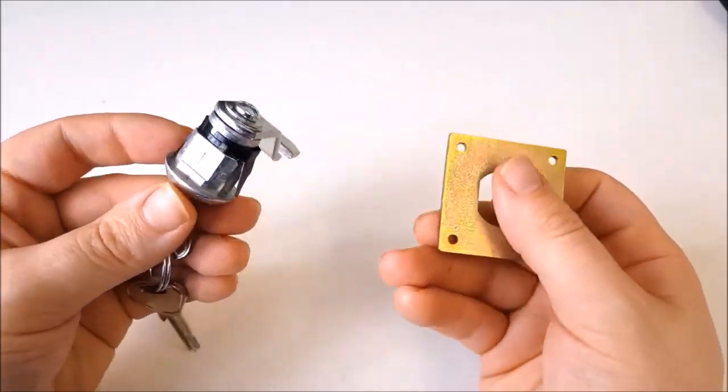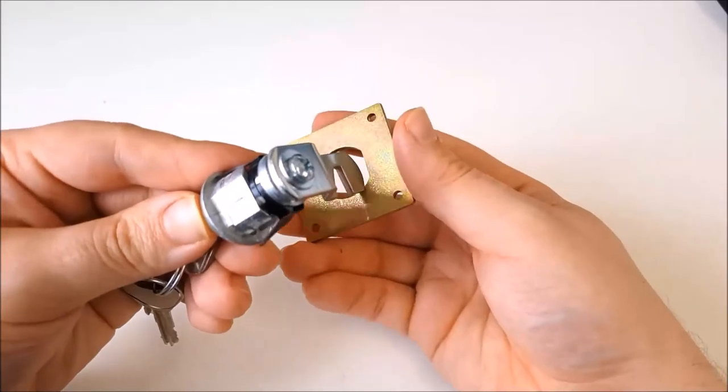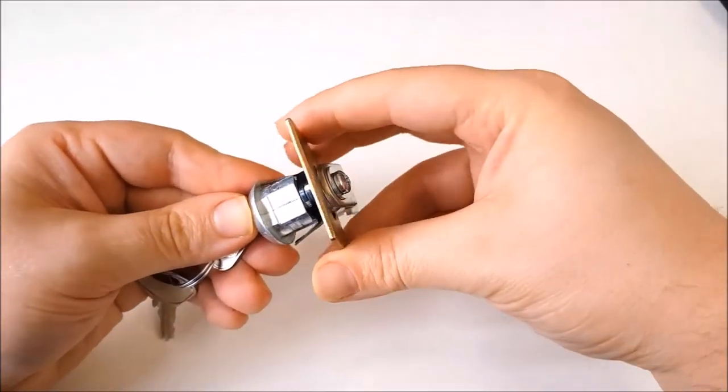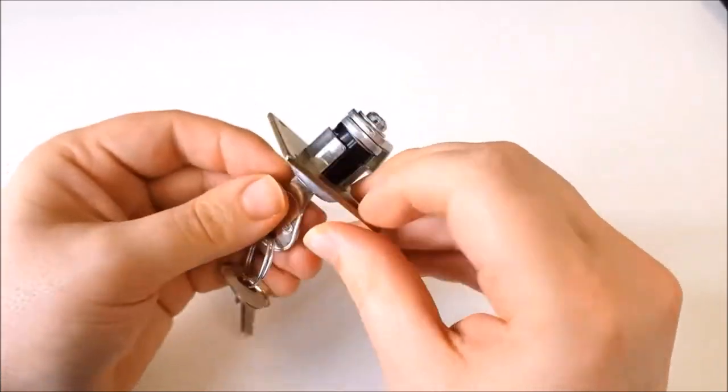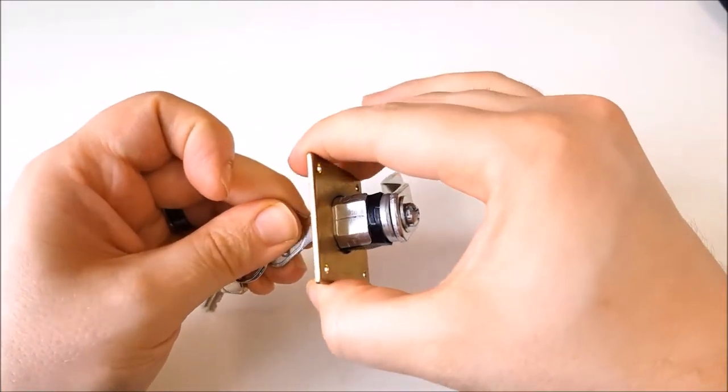The last fixing method here is the spring clip. As I'm showing here, once this is mounted into the locker door, the clips simply spring out to lock it in place.